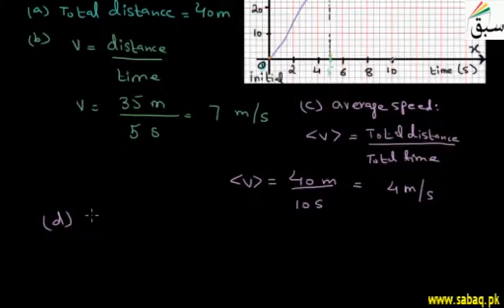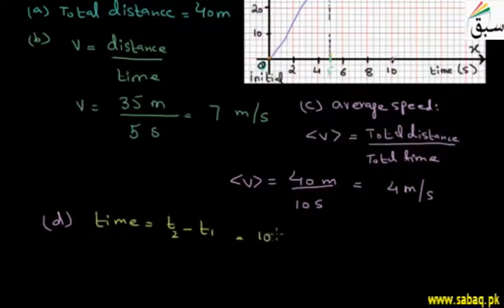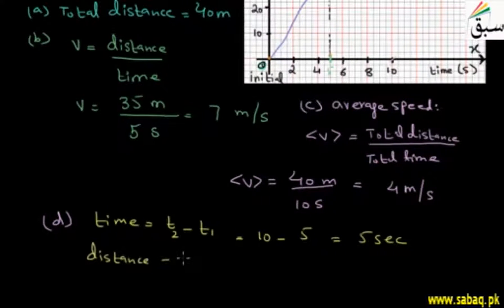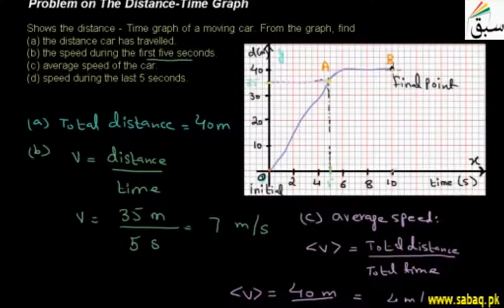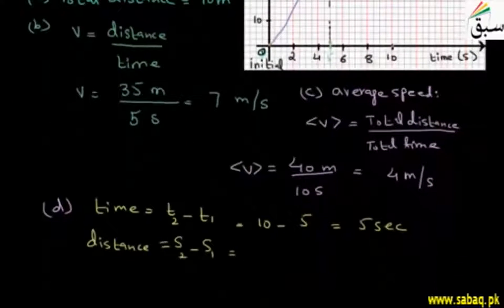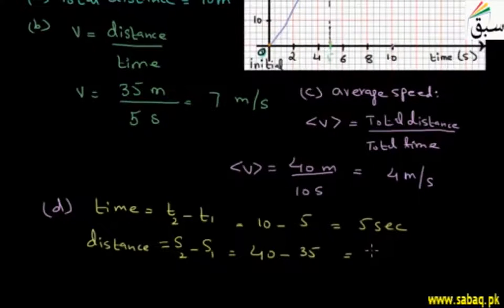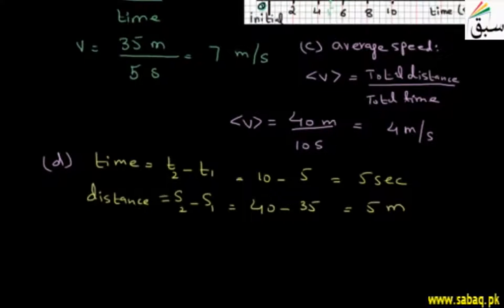For the last 5 seconds, the time is t2 minus t1 — t2 is 10 seconds and t1 is 5 seconds, so 10 minus 5 equals 5 seconds. For distance, S2 minus S1 — S2 is the B point which is 40 meters and S1 is 35 meters. So 40 minus 35 gives 5 meters. We have our distance and time.